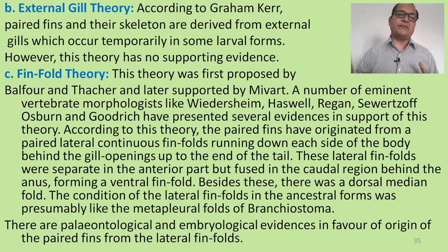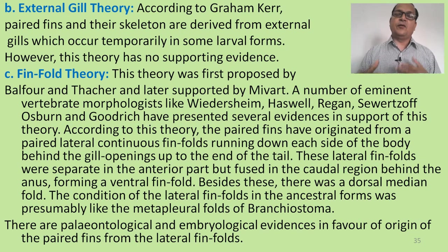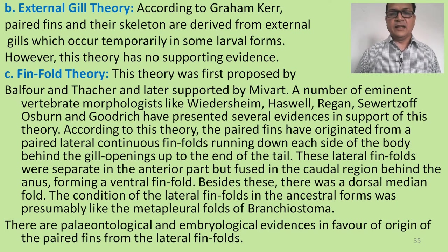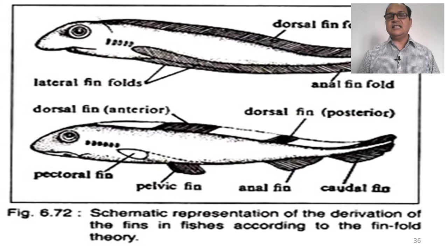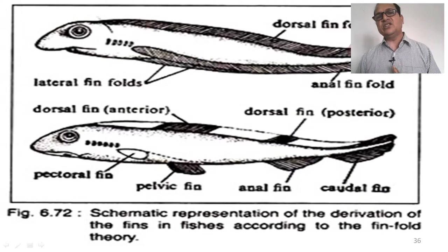Besides these, there is a dorsal median fin. The condition of the lateral fin fold in the ancestral forms was presumably like the meta-pleural fold in Branchiostoma. Just like the meta-pleural fold, these lateral fin folds are found in the ancestral fishes. There are paleontological and embryological evidences in favor of the origin of paired fins from the lateral fin fold. This is the schematic presentation of the derivation of the fin fold according to the fin fold theory, showing the continuous dorsal and lateral fin folds of the ancestors of fishes, which became discontinued to form different types of fins.